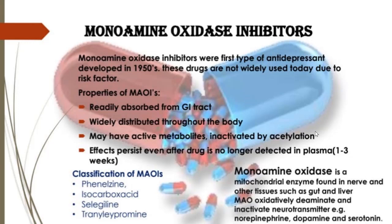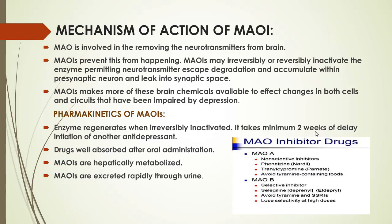Mechanism of action of monoamine oxidase inhibitors: MAO is involved in removing neurotransmitters from the brain. MAOIs prevent this from happening by irreversibly or reversibly inactivating the enzyme, permitting neurotransmitters to escape degradation and accumulate within the presynaptic neuron and leak into the synaptic space, making more of these brain chemicals available to affect changes in cells and circuits impaired by depression.